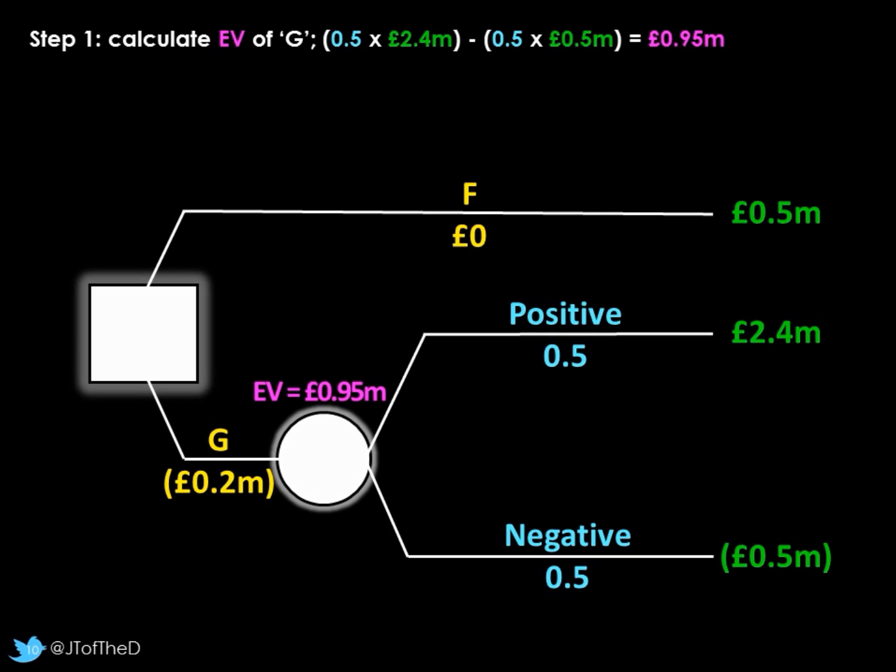G has two possible outcomes, a positive outcome and a negative outcome. They happen to have a split probability of happening, so 0.5 is a 50-50 chance. A positive outcome would be 2.4 million pounds increase in revenue. A negative outcome would be a loss of half a million pounds. So again, it's the same calculation. Step one, the expected value shown in pink here is the probability of a positive outcome 0.5 times what would be the positive outcome itself, 2.4 million. We're going to take away again - it's got a negative outcome - 0.5 times 0.5 million pounds. That would give us an expected value of 0.95 million pounds.